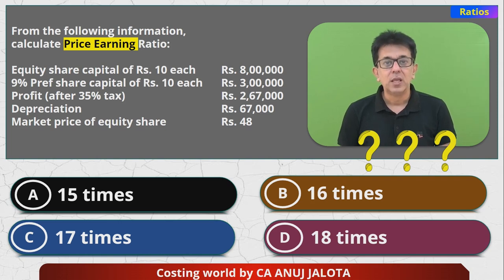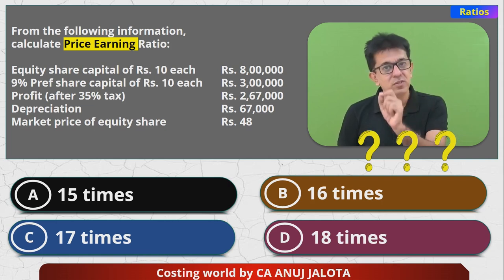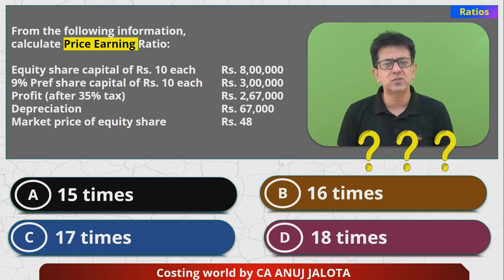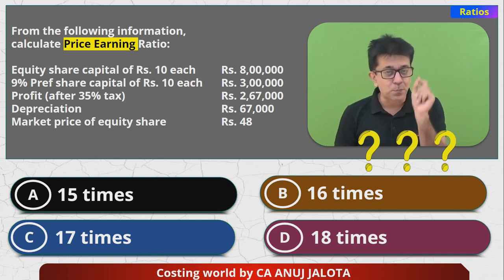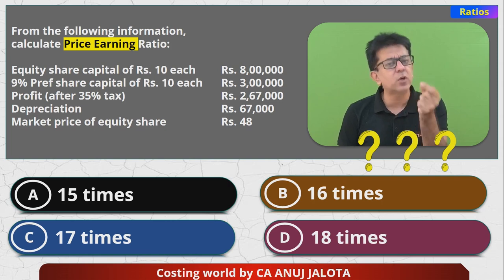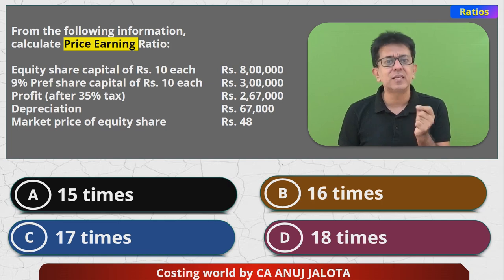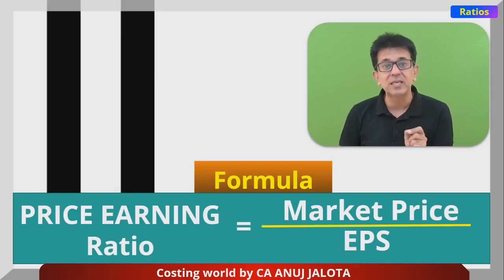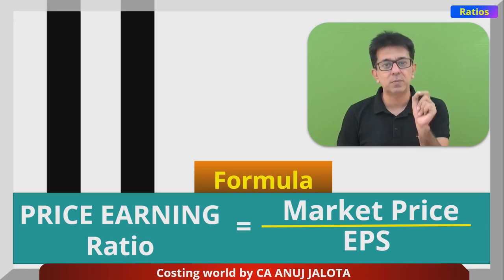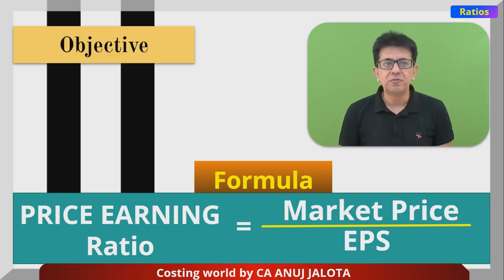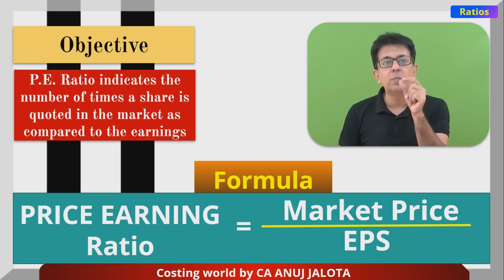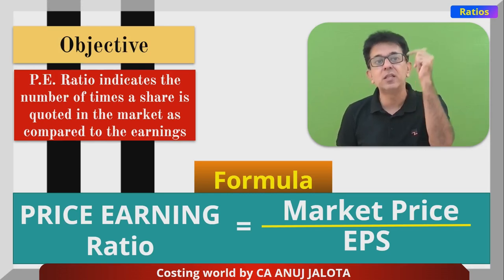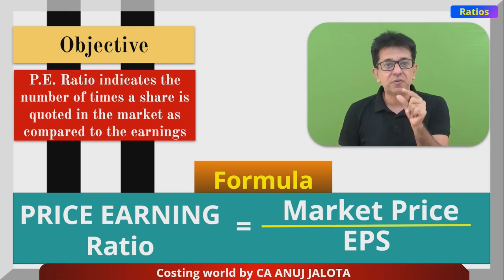Now you should be knowing how to compute the price-earnings ratio. Price-to-earnings ratio — if you crack these words, you'll understand it. Price means the price of equity share, that's the market price. Earnings means EPS. So the formula is: P/E ratio = Market Price ÷ EPS. The objective is to find how many times a share is being traded in the stock exchange relative to its earnings.